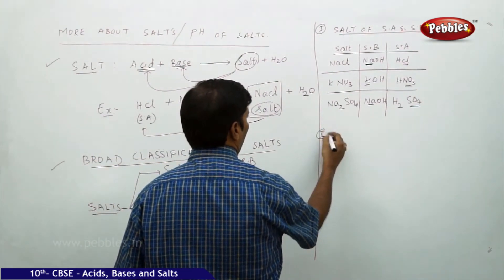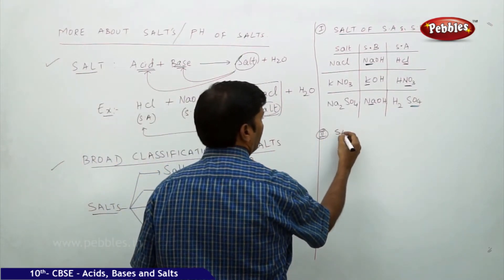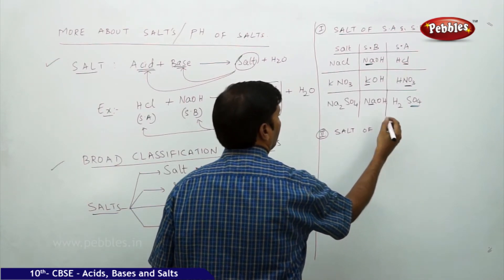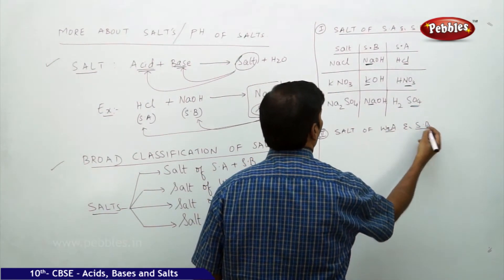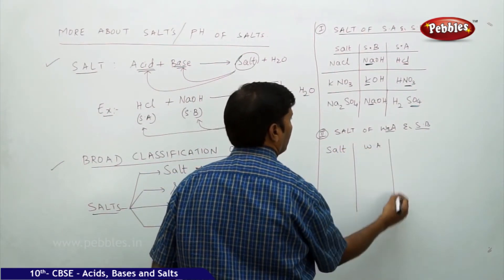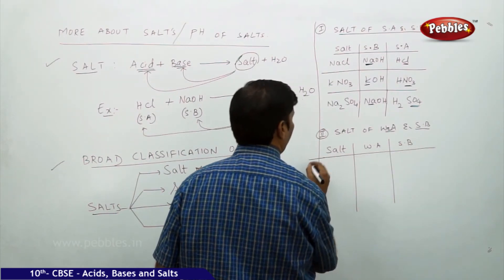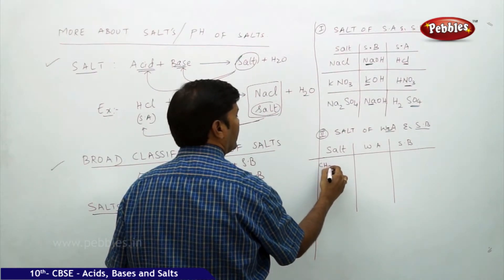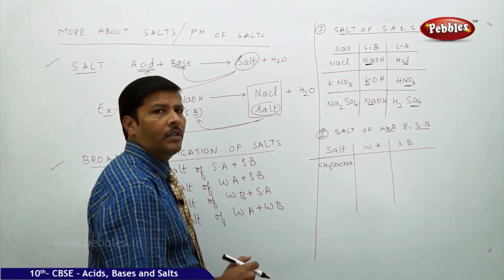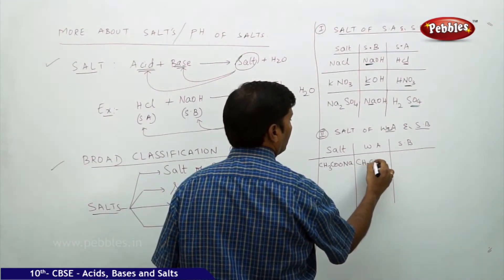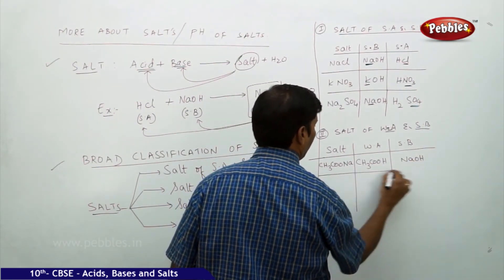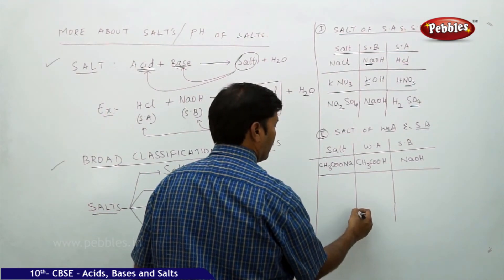For the second category — salt of weak acid and strong base — take CH3COONa, sodium acetate. Sodium acetate contains weak acid CH3COOH (acetic acid) and strong base NaOH. So sodium acetate is a salt of weak acid and strong base.